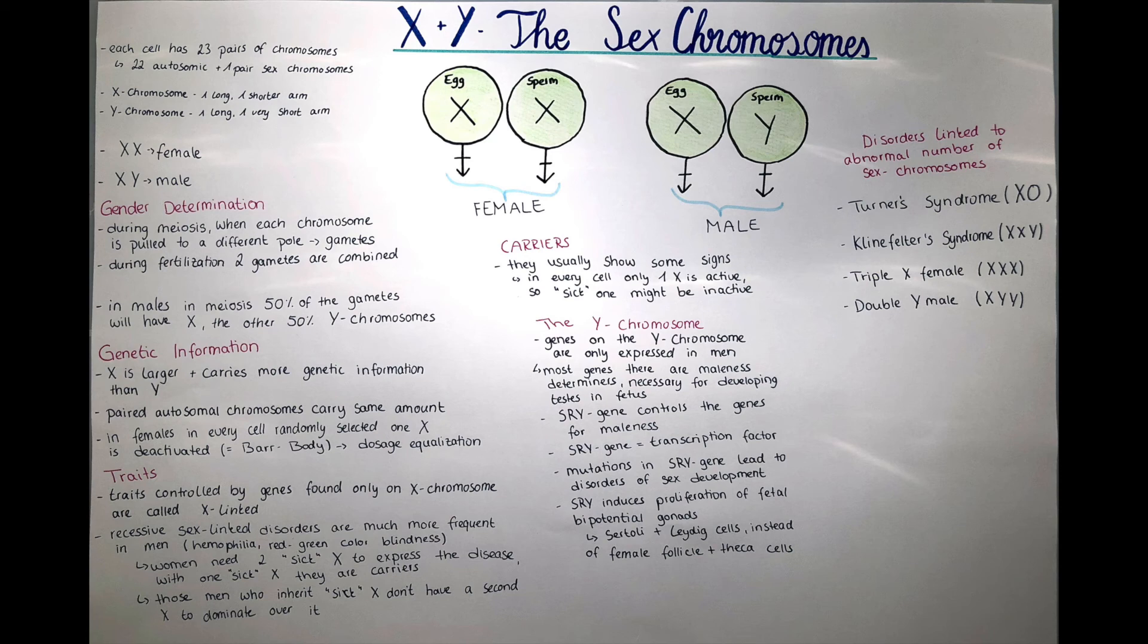In the end, I would like to talk about a few disorders which are linked to abnormal numbers of these sex chromosomes. About each of the diseases I will talk at a later point in the sequence, but I just thought it's important to mention them here anyways. I mentioned four of them. The Turner syndrome where the sex chromosome is just an X and no Y. People that have this disorder have a very typical appearance, which I will talk about in one of the next videos.